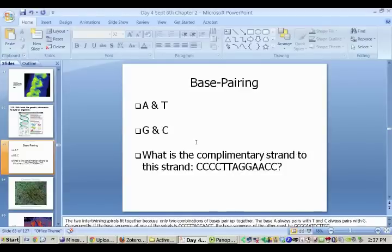So A always bonds with T, G always bonds with C. So if we were to ask ourselves, if we have one strand of DNA that is C-C-C-C-T-T-A-G-G-A-A-C-C and we were to ask what is the complementary strand to that, well since G always goes with C, the complementary strand would start off G-G-G-G, and then T always goes with A, so A-A, and then T-C-C-T-T-G-G. So it's easy for us to figure out what two strands of DNA or complementary strands are going to go together.